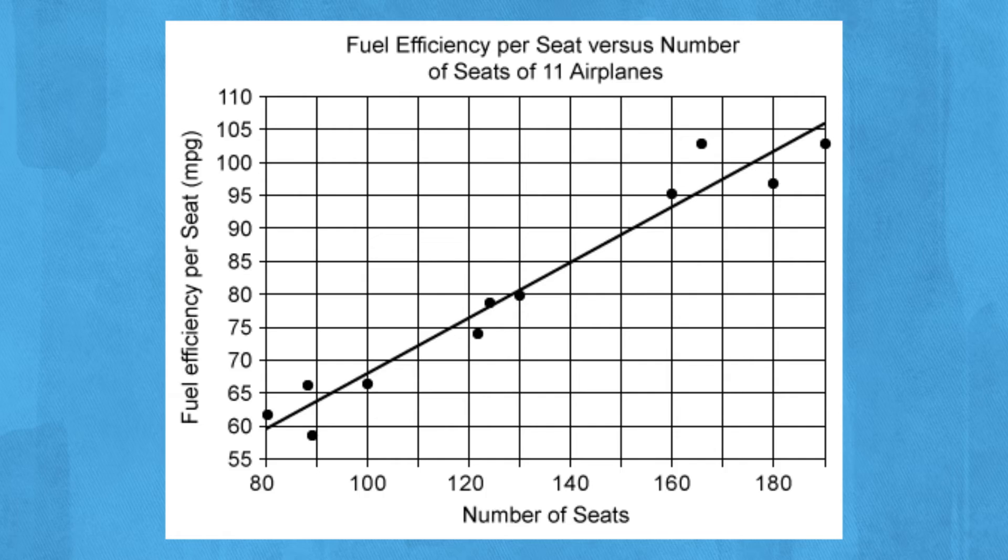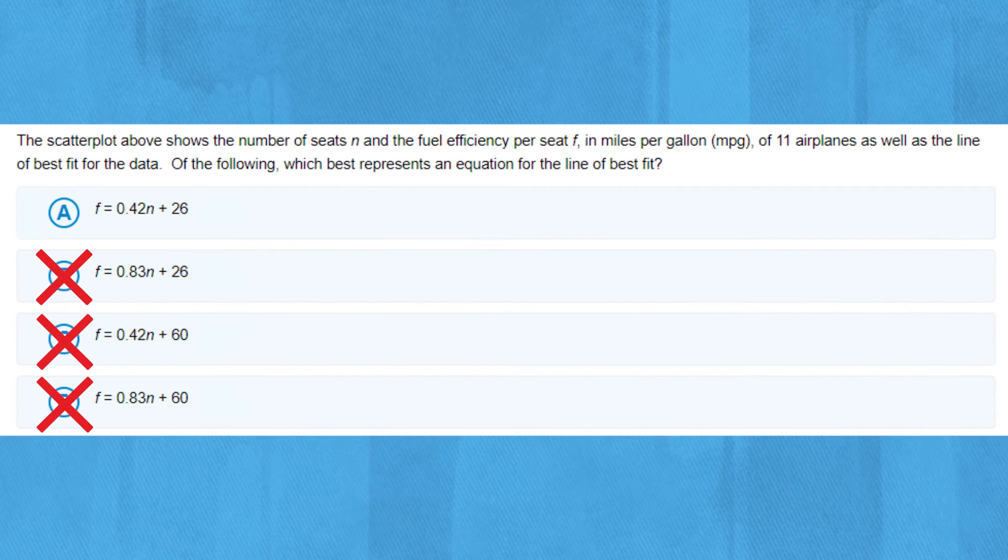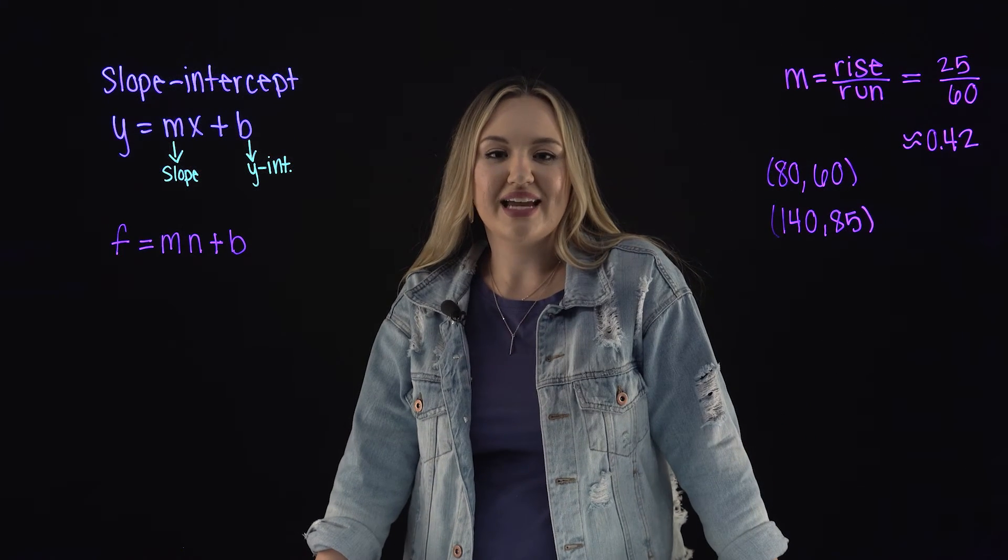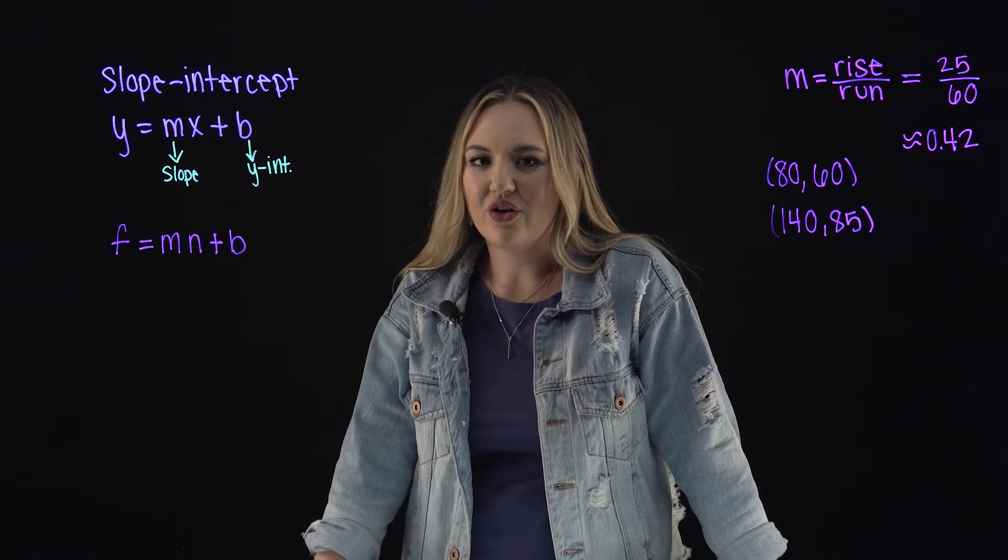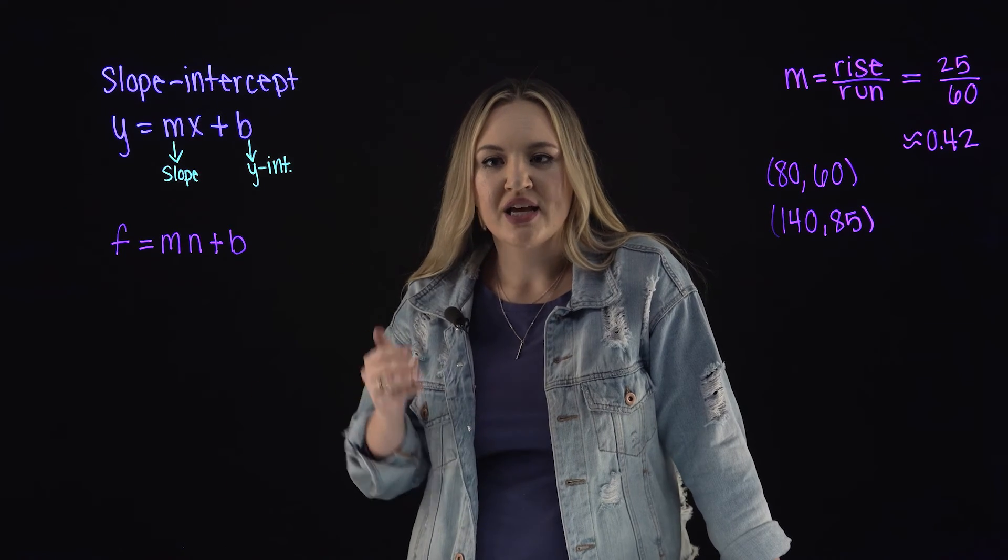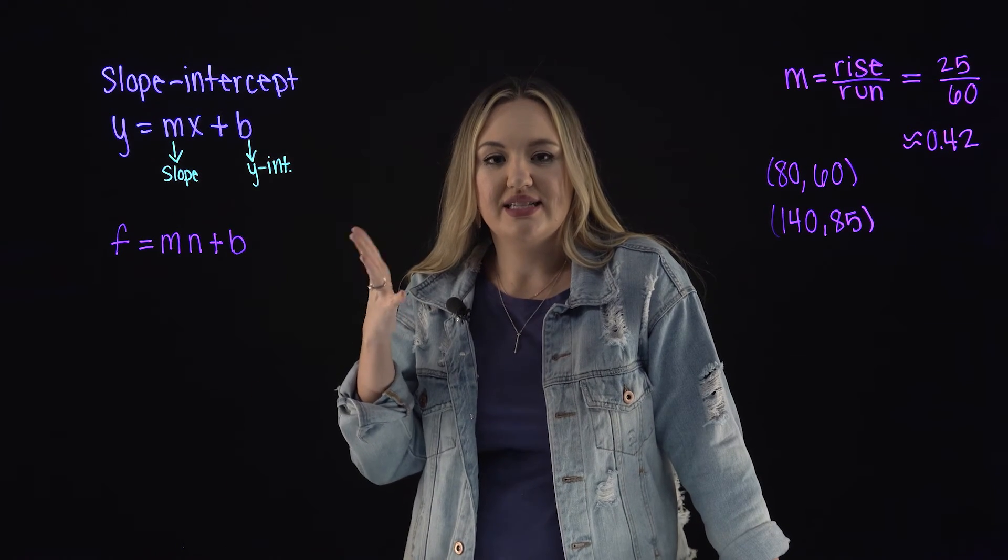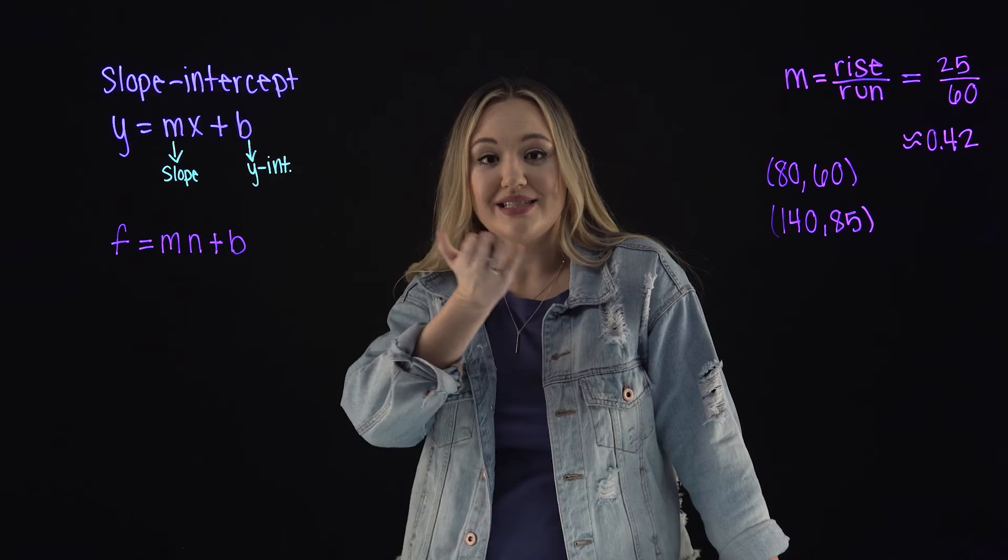So 60 is not our y-intercept. So we can eliminate choice C. Choice C is incorrect, which leaves us with choice A. Now let's take a look and picture it on the graph just to prove it to ourselves that our y-intercept is actually what choice A says of 26.